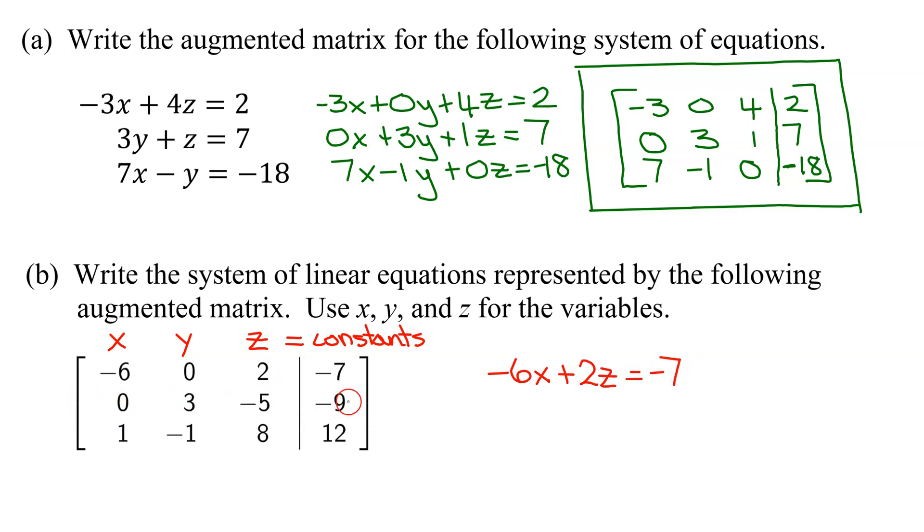Row 2 is my second equation. I have no X's. I have 3Y's, minus 5Z's, equals negative 9.